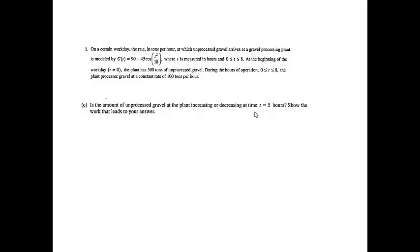Part C: Is the amount of unprocessed gravel at the plant increasing or decreasing at time t equals 5? Show the work that leads to your answer. We need to figure out if that unprocessed amount is increasing or decreasing at time equals 5. G is how fast unprocessed gravel is getting to the plant, and we know the plant processes gravel at 100 tons per hour. So we need to figure out whether the rate at which gravel is arriving is bigger or less than how fast they're able to process it. I'm going to find G of 5 and compare it to 100.